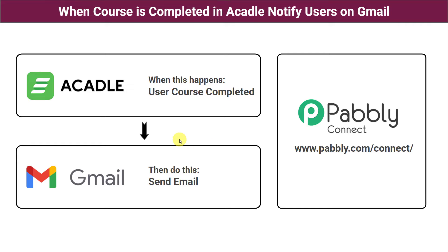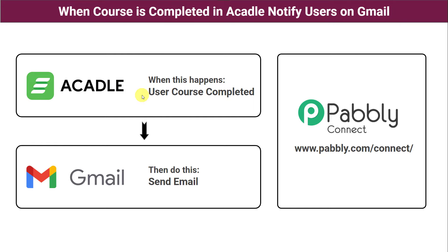The idea here is that you run an academy where you have uploaded some courses on your Acadle account. Now you want that whenever a user completes any course, he should automatically receive a notification on his Gmail account that the course has been completed. For this we need to create a connection between Acadle and Gmail so that whenever the course is completed, an email is sent to the user.